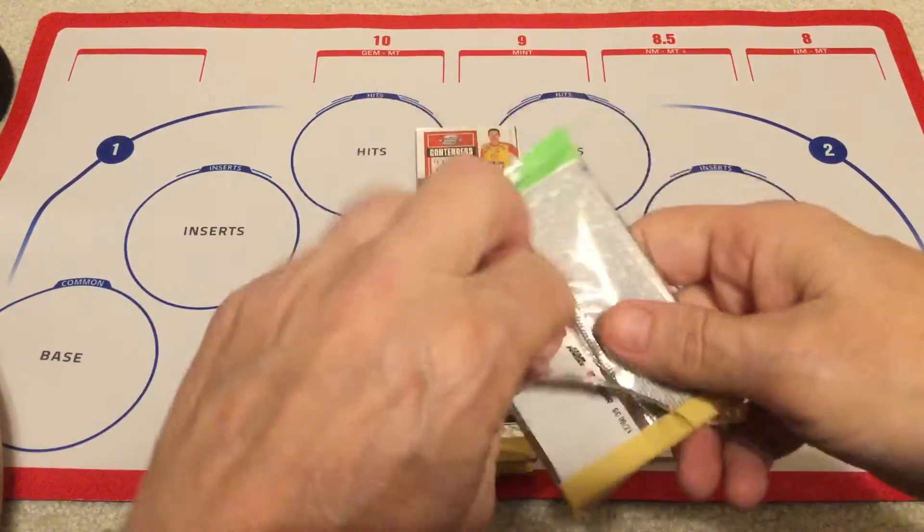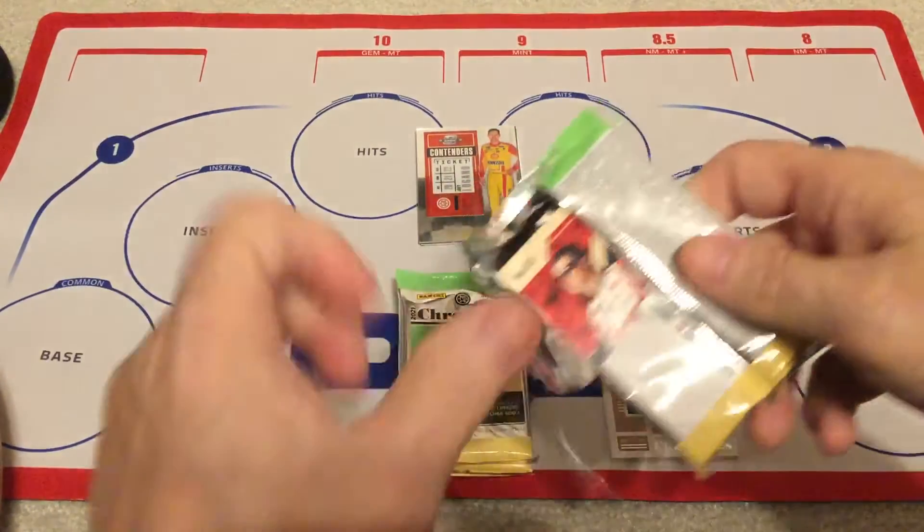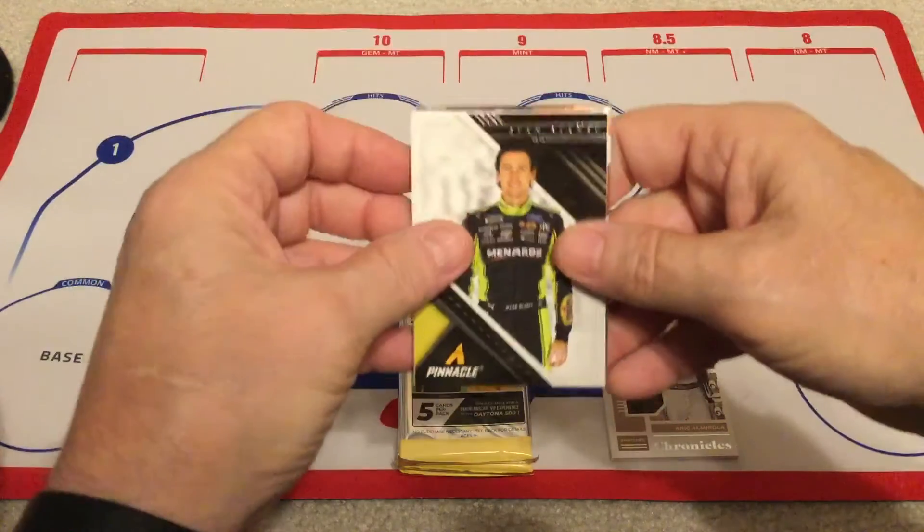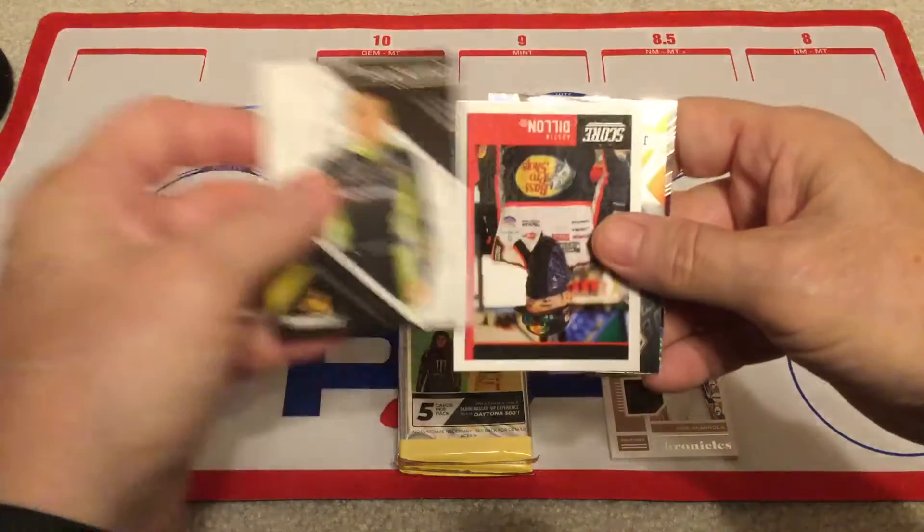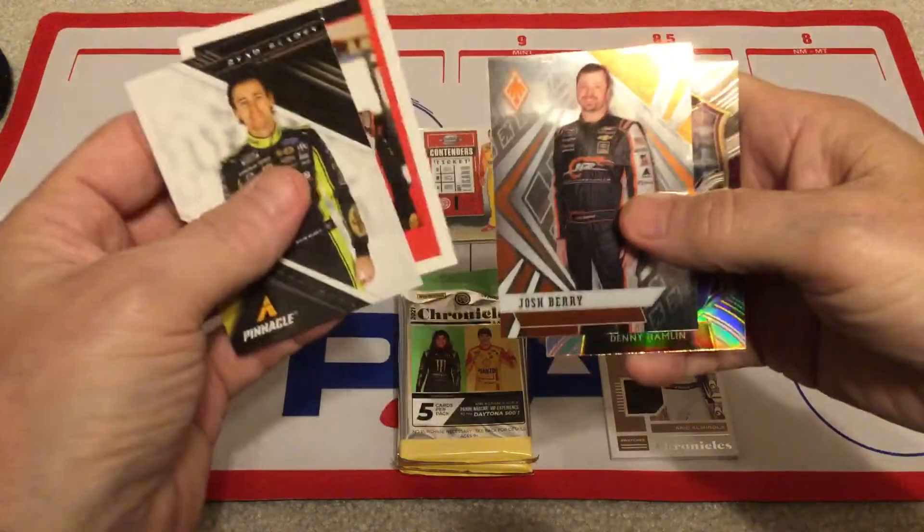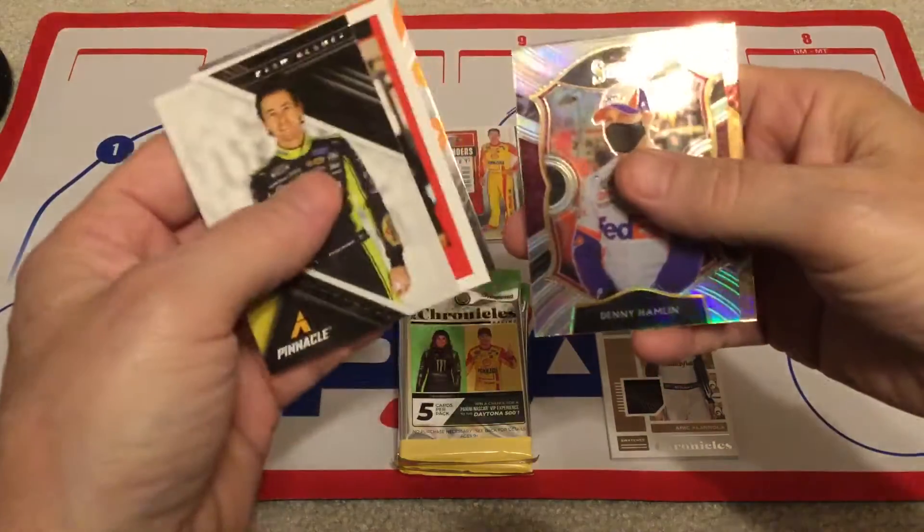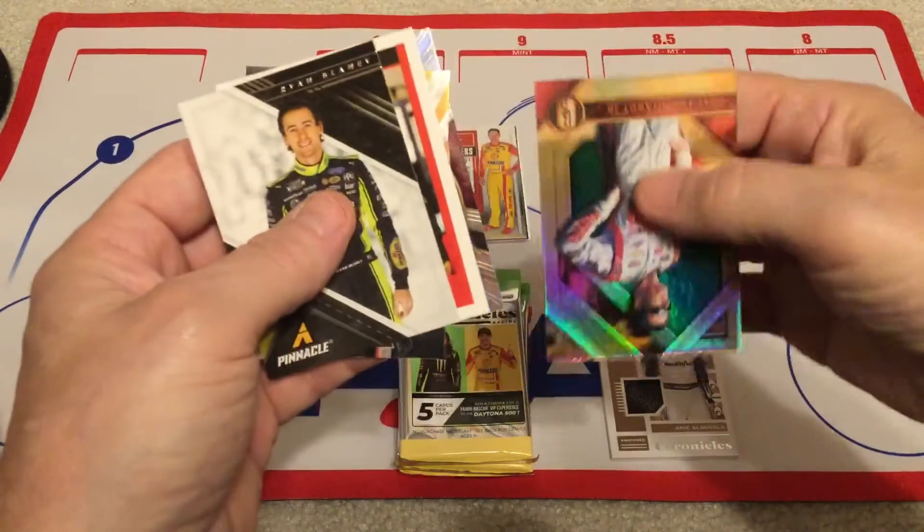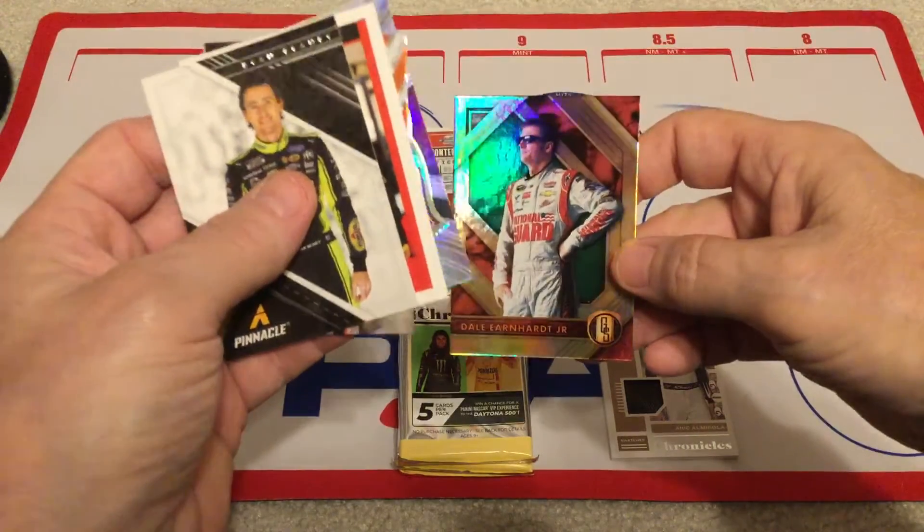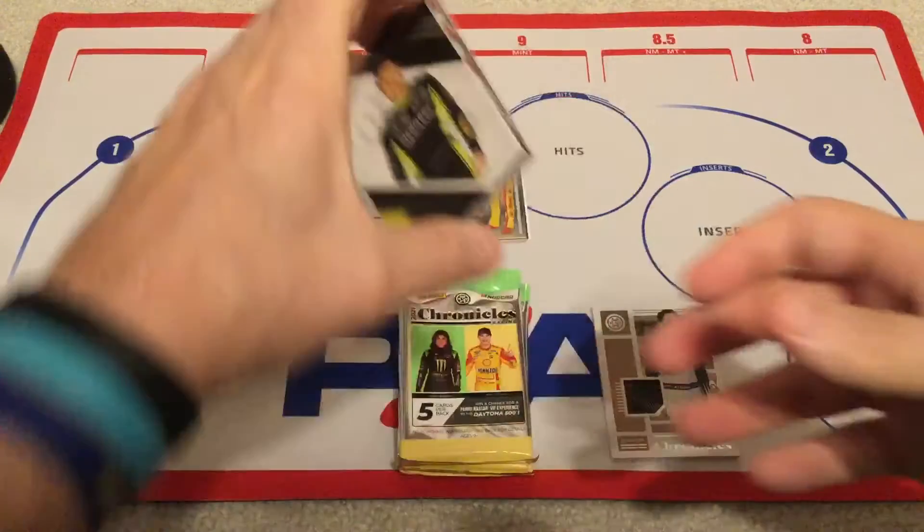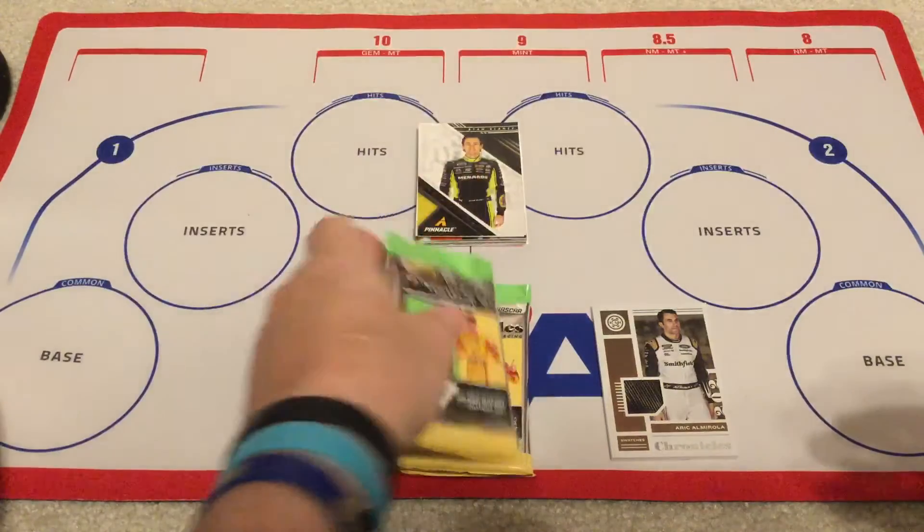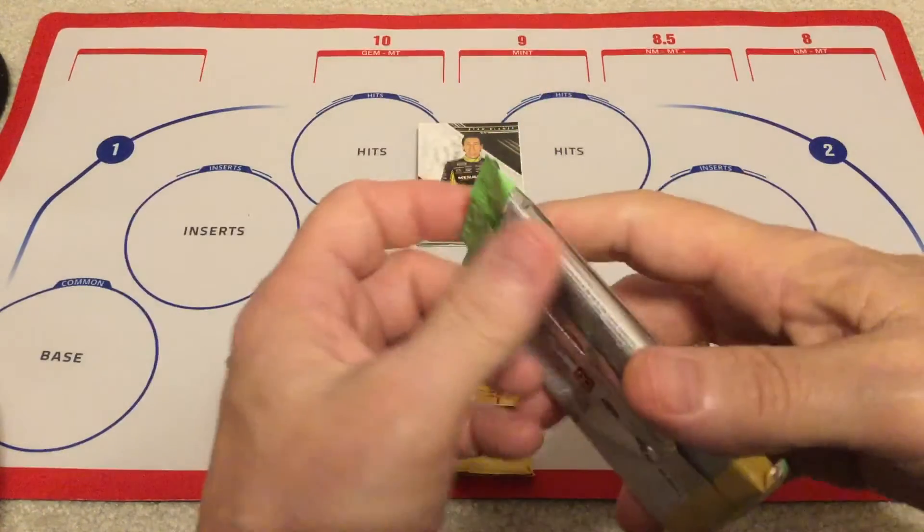This pack acted crazy. All right, there's Ryan Blaney in Pinnacle, Austin Dillon again, Josh Berry in Phoenix. I like that. Denny Hamlin and Dale Earnhardt Jr., pretty cool. He raced actually this past weekend in Xfinity, in the Xfinity race at Richmond. I think he finished like mid-pack, he did okay considering he hadn't been in the car in a while.